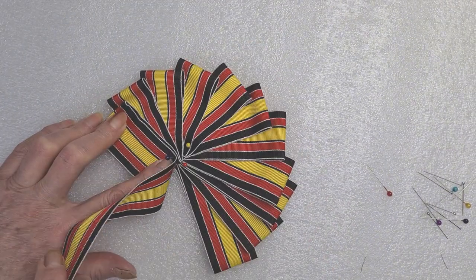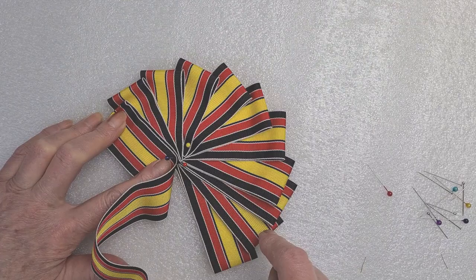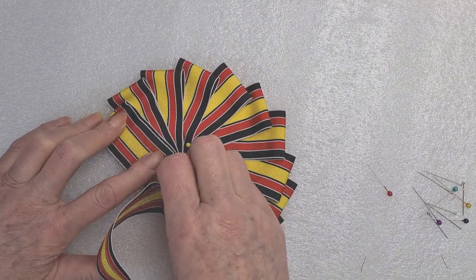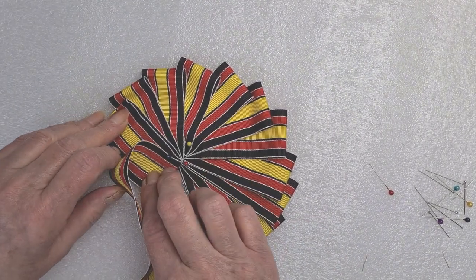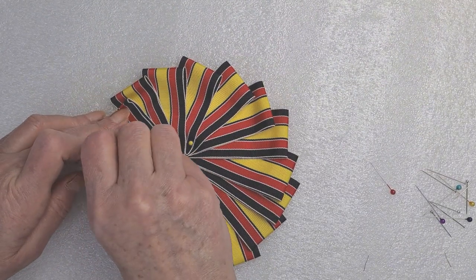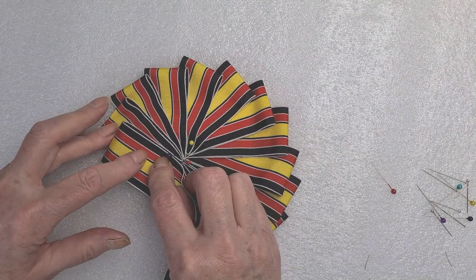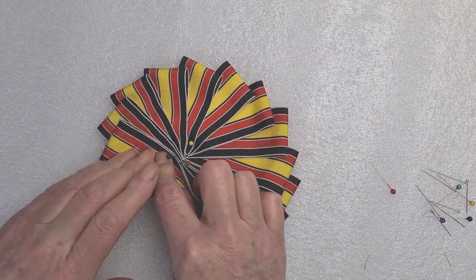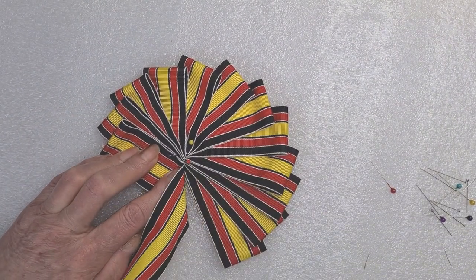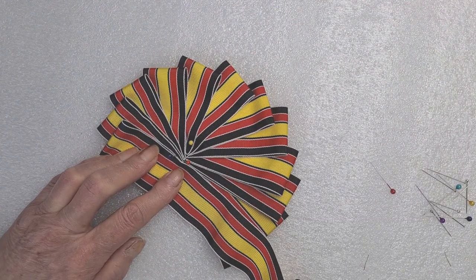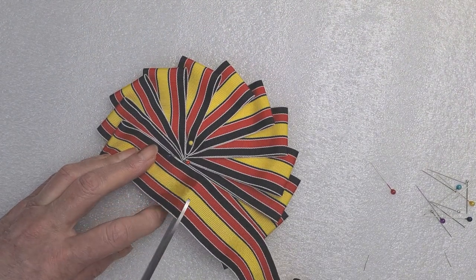You can see I'm getting smaller and smaller. Then decide where you want to stop. Do you want to stop fairly soon, or you can carry all the way round to the end if you want, but it looks nicer if it's sort of a fan shape. I think I'm going to stop there. I'm going to chop off my ribbon.